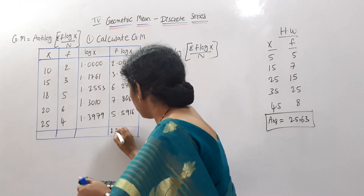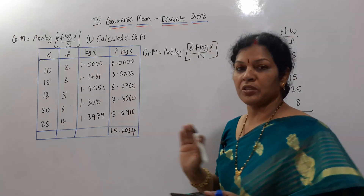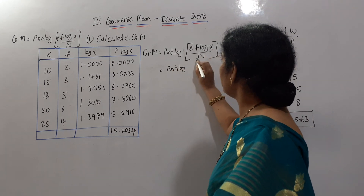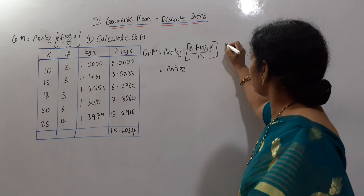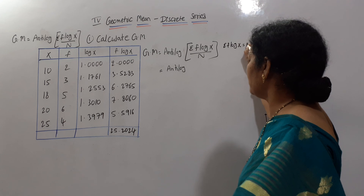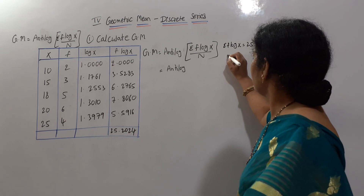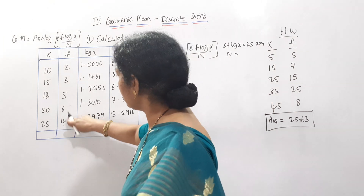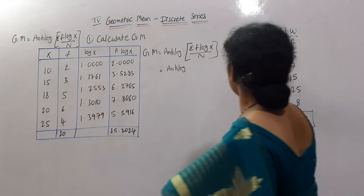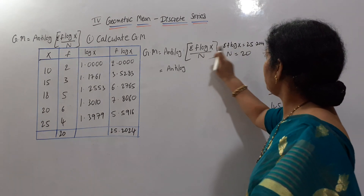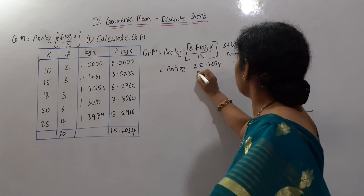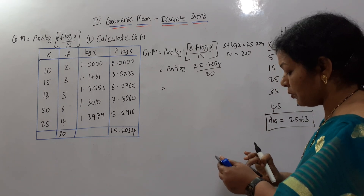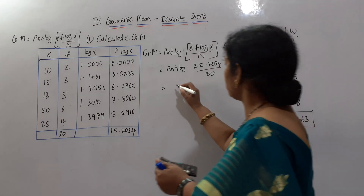Totaling all values using memory recall gives Σ(f × log x) = 25.2024. Now applying the formula: anti-log of (Σ f × log x / n). n is the total frequency: 10 + 10 = 20. So we calculate 25.2024 divided by 20 = 1.2601. We now need anti-log of 1.2601.